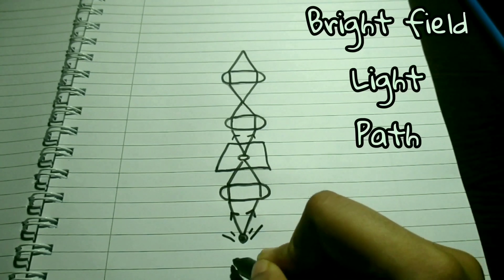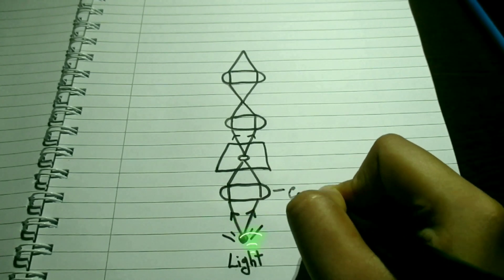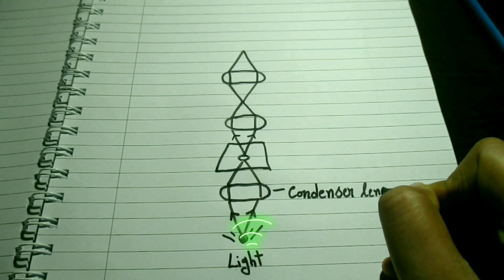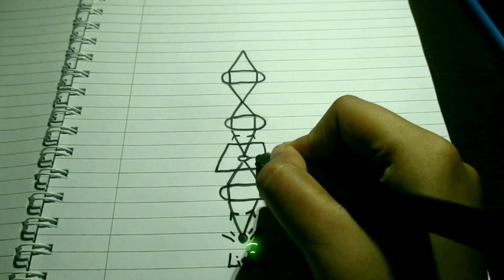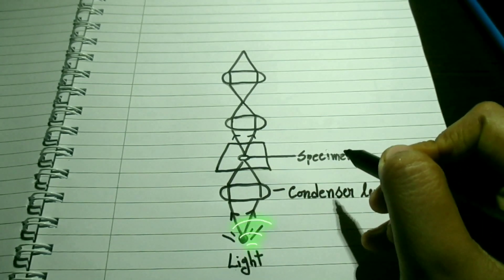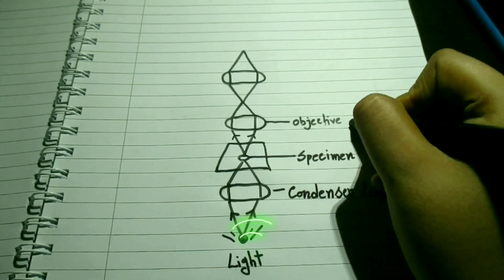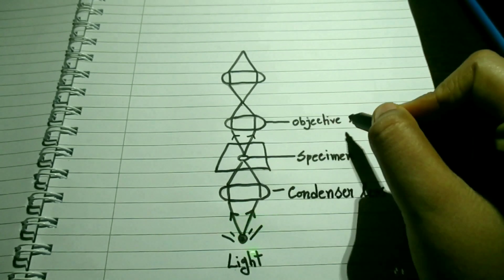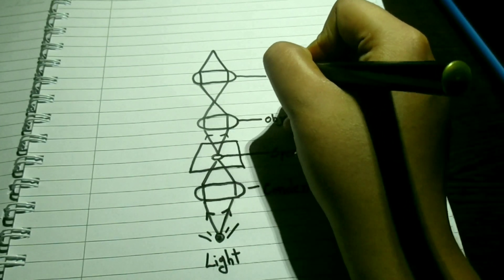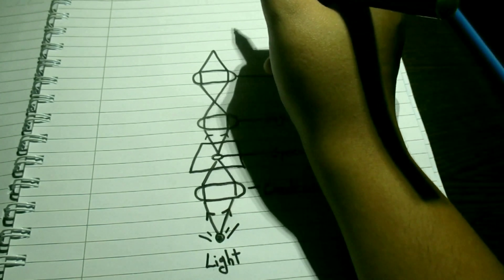Let me draw the light path of bright field microscopy so that it will be helpful to understand how it works. Here is a trans-illumination light source, commonly a halogen lamp in the microscope stand. This is the condenser lens which focuses light from the light source onto the sample. This is the sample placed on stage, and objective lens which collects light from the sample and magnifies the image. The last one is oculars. There will be some camera, mainly a charge-coupled digital camera, to view the sample image.